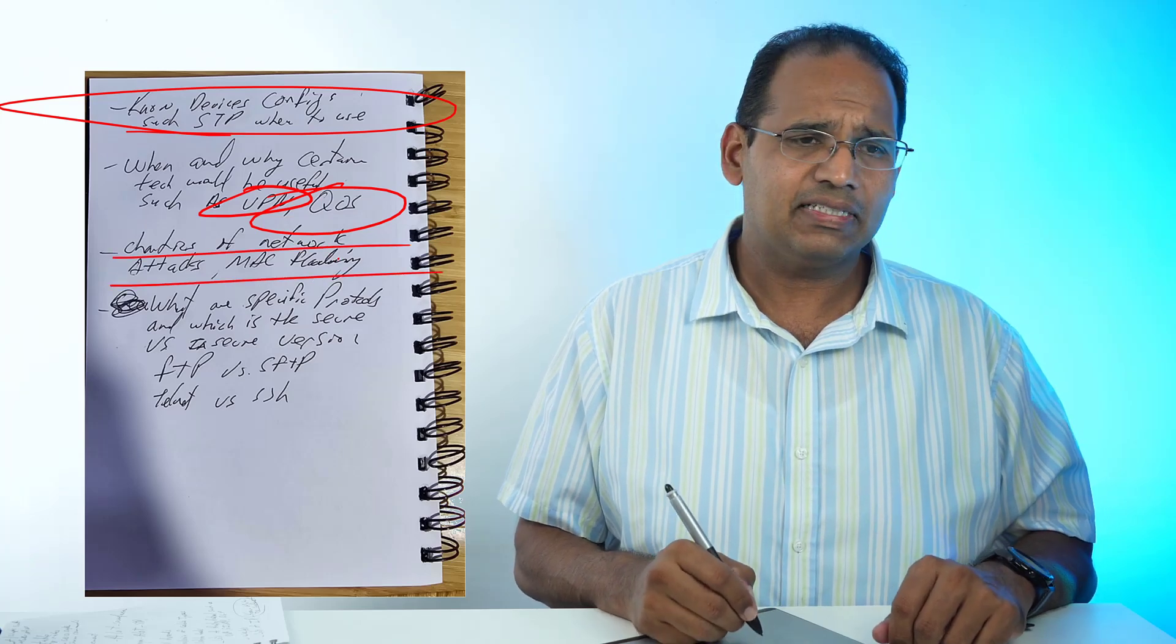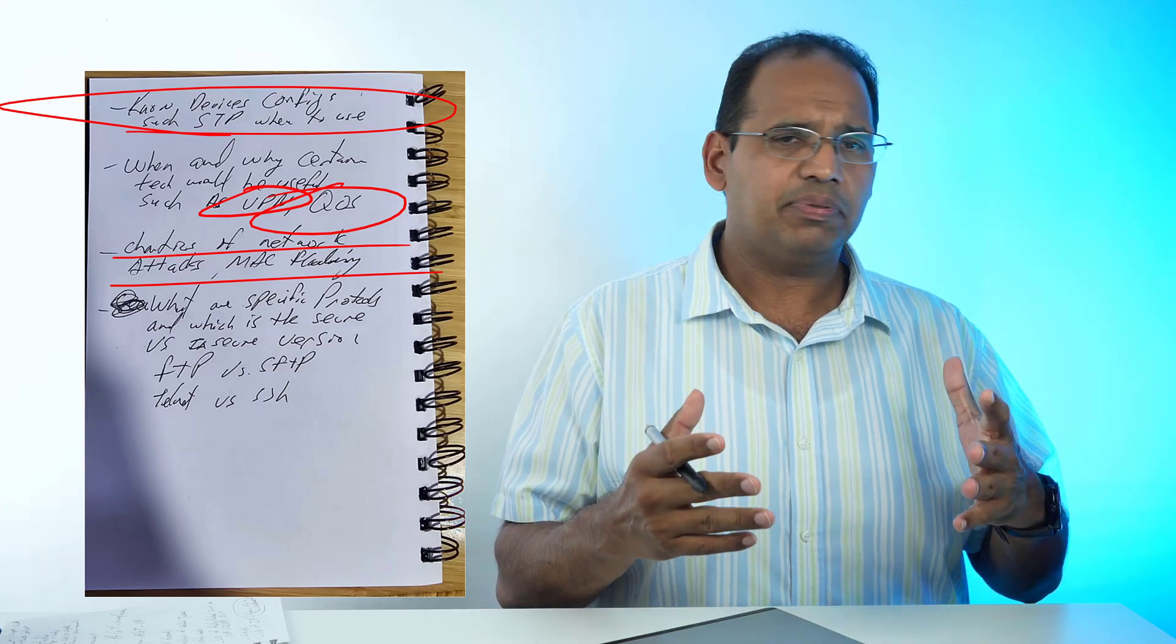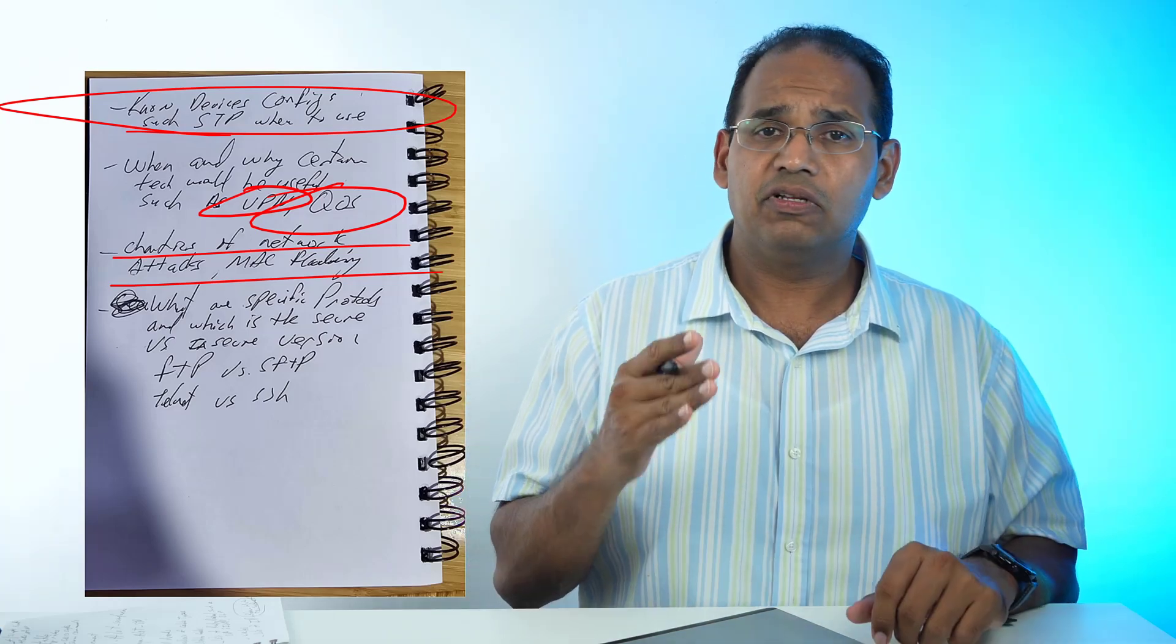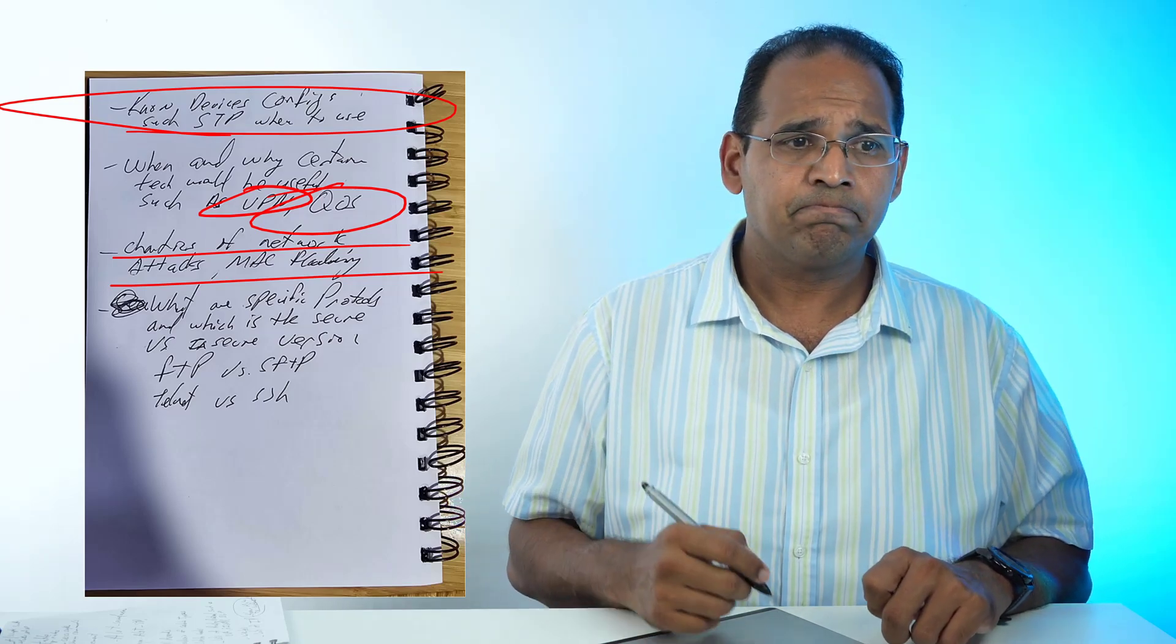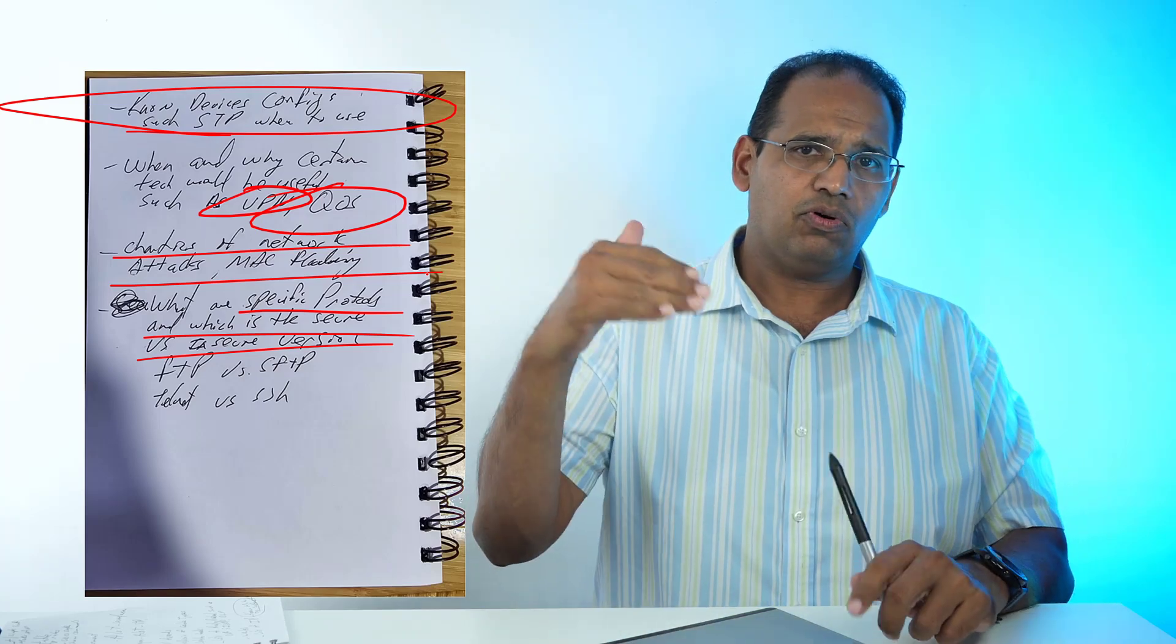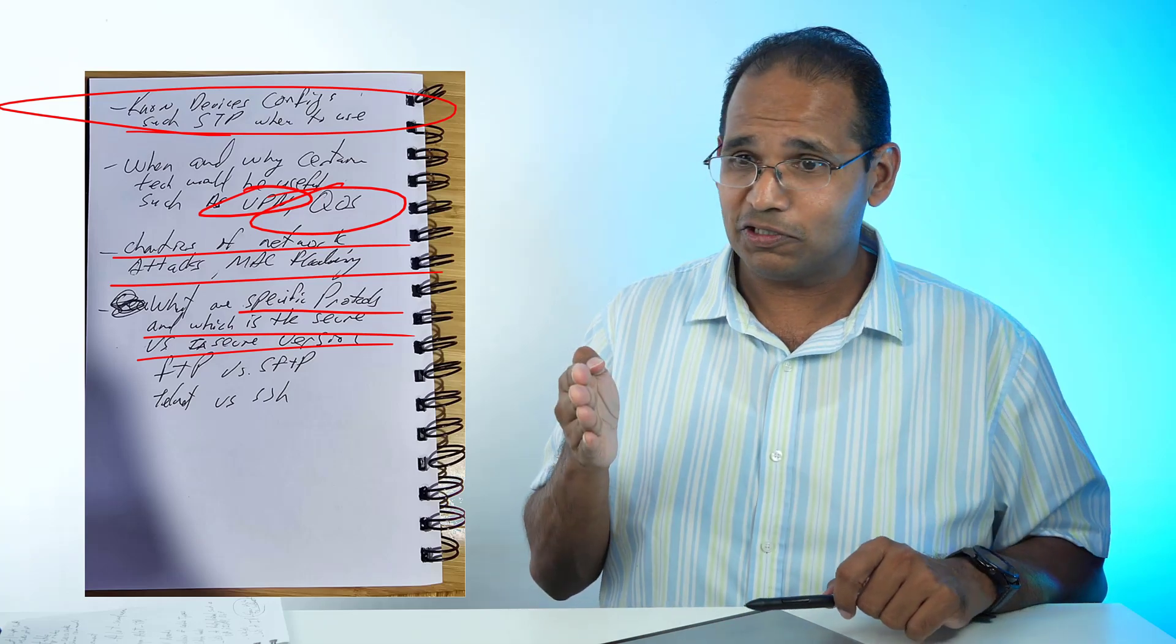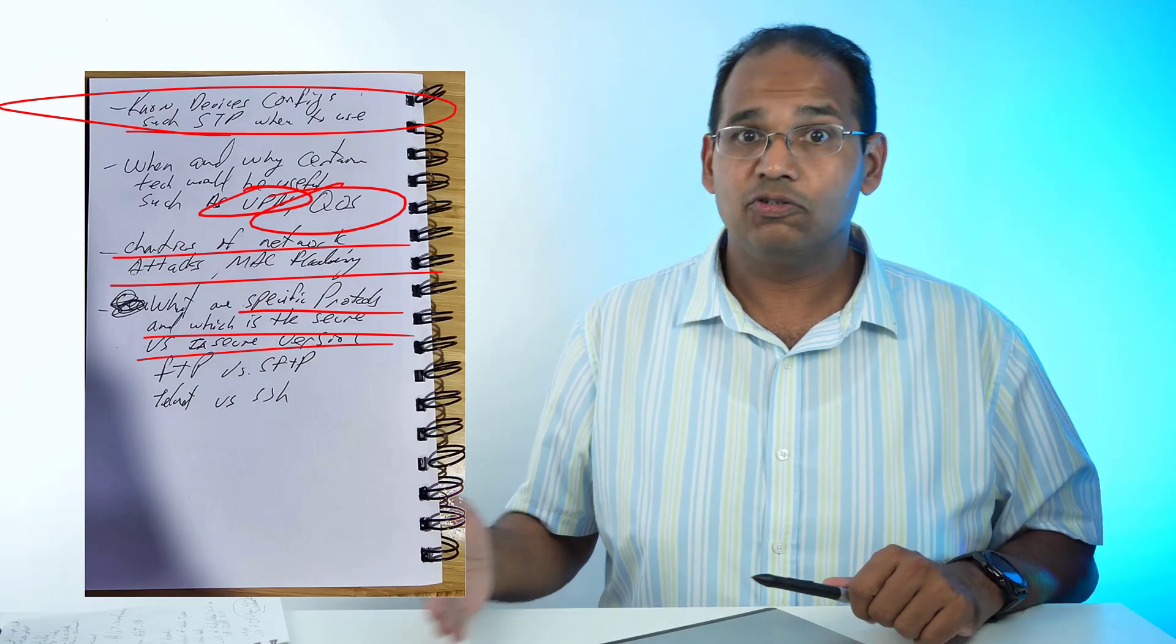You do need to know characteristics of attacks. You're not going to get a ton of security questions, but there were five or six. For example, if somebody's flooding a CAM table—what exactly is a CAM table? It's the table in the switch that holds the MAC address to the port number. If they're flooding that, they're basically doing MAC flooding. You need to know the characteristics of certain attacks. When it comes to security, there was a lot of protocols—FTP, SMTP, SSH. You need to know what those protocols are and you need to know what's the secure version versus the insecure version. Don't open port 80, open 443. Don't open Telnet, use SSH. Make sure you know the port numbers.